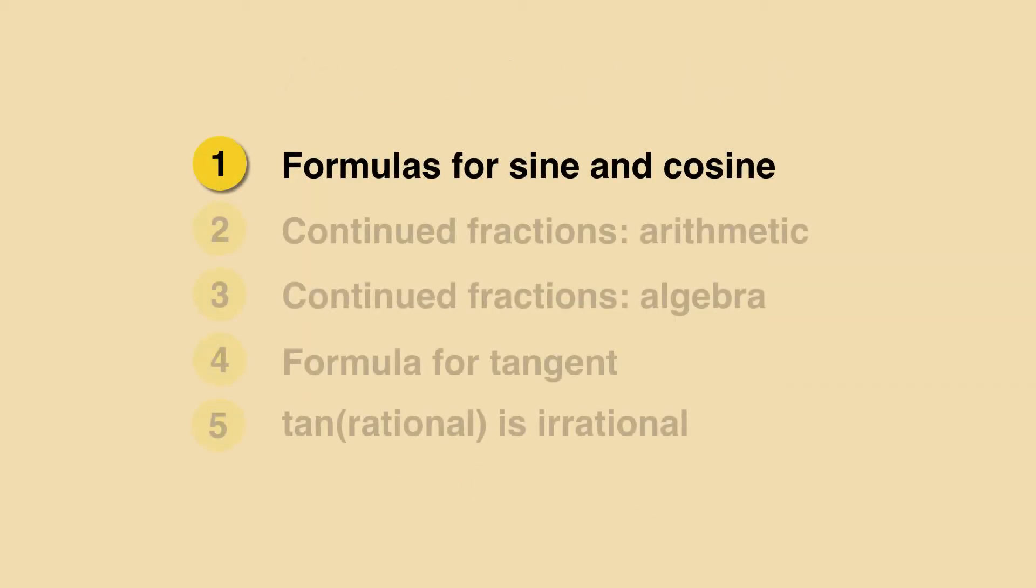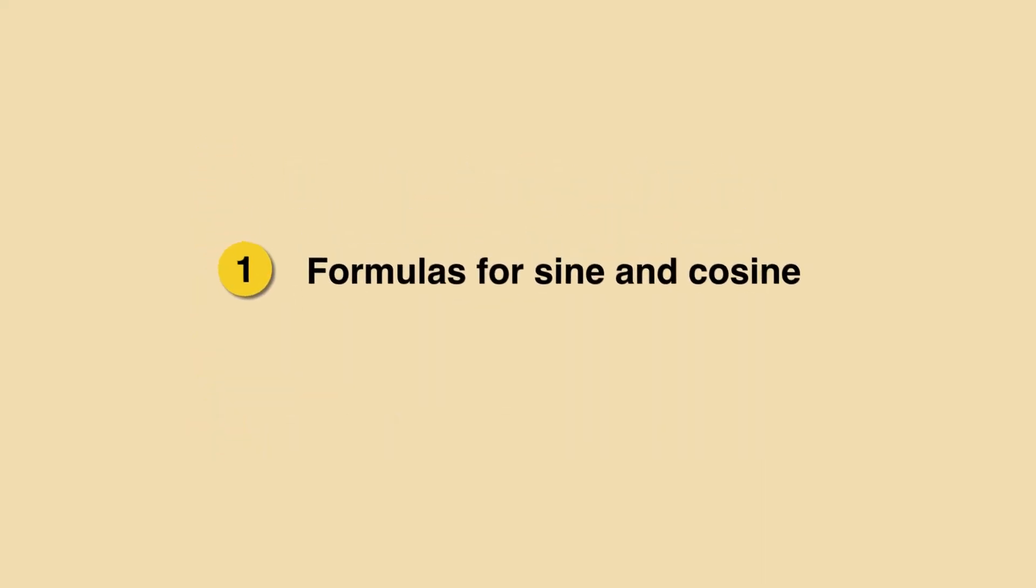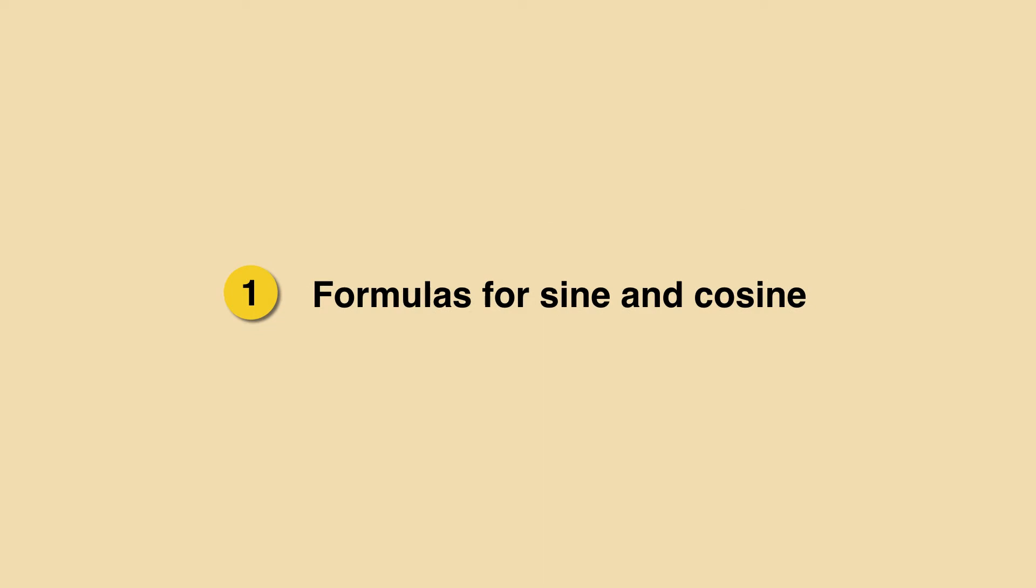Hi there! So, have I sparked your curiosity? Great! In this video we start our irrationality proof for pi with some simple geometry in the unit circle to find expressions for the sine and cosine of an angle. This is a worthwhile goal in itself, so we can understand how our calculators and computers do their job.